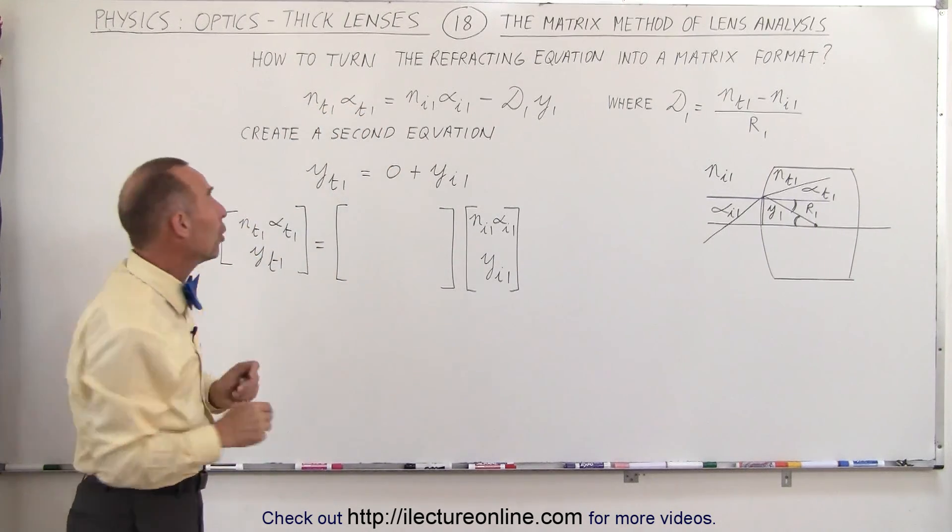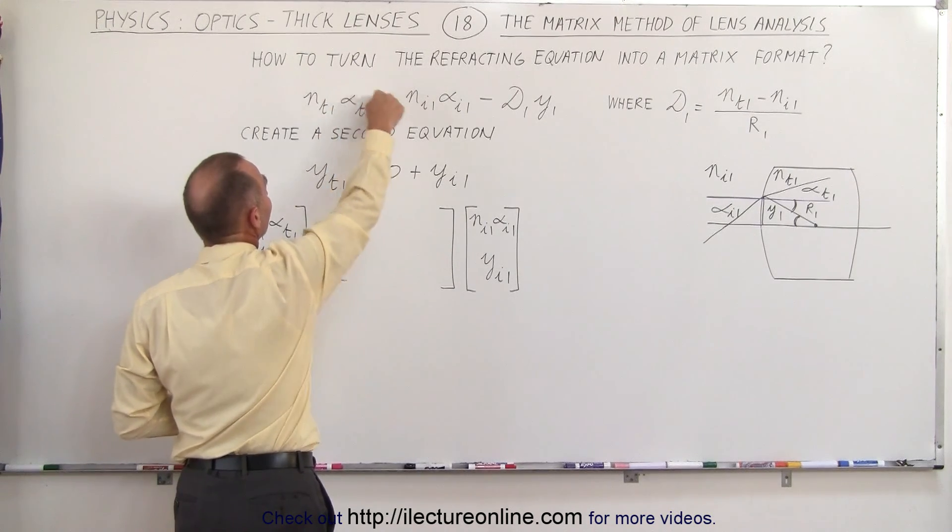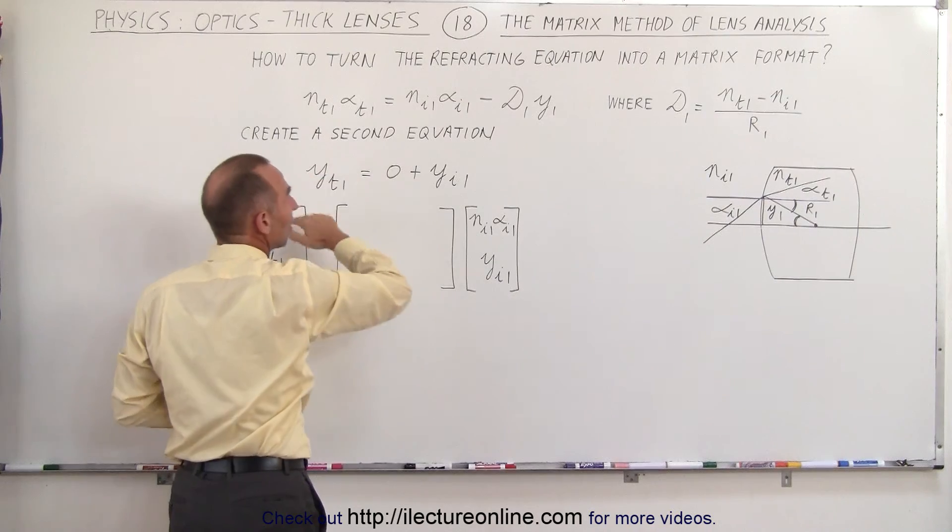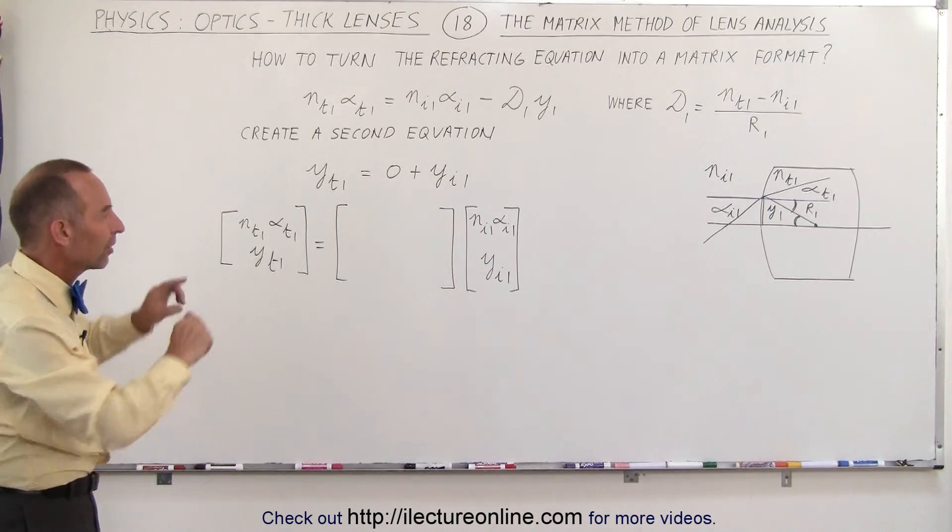So again we can take the two unknowns which is the angle on the transmit side plus the height as we transition, we need to be able to calculate what those values are and that's why we need both of the equations.